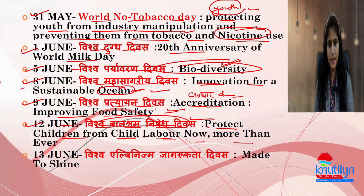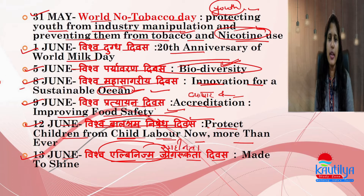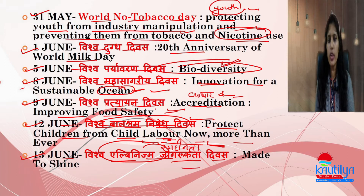30th June is World Albinism Awareness Day. Albinism is related to colour blindness — a condition affecting eyesight. The day is observed to raise awareness about this condition and to advocate for the rights of those affected.